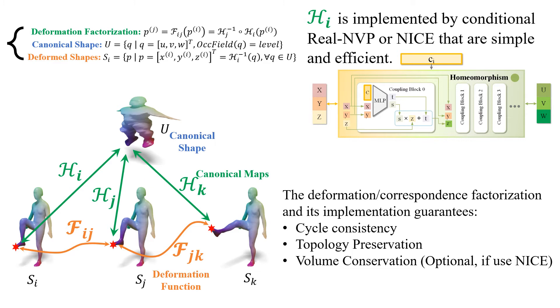we will present next an architecture that automatically finds the best canonical shape and associated canonical maps that benefit the downstream reconstruction and correspondence prediction accuracy.